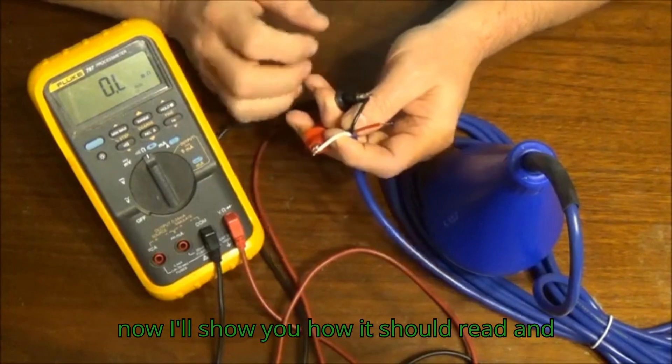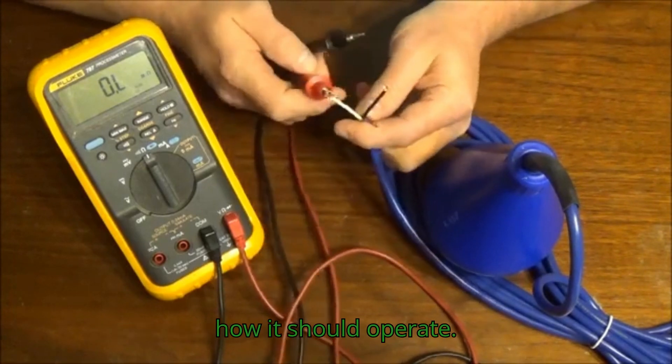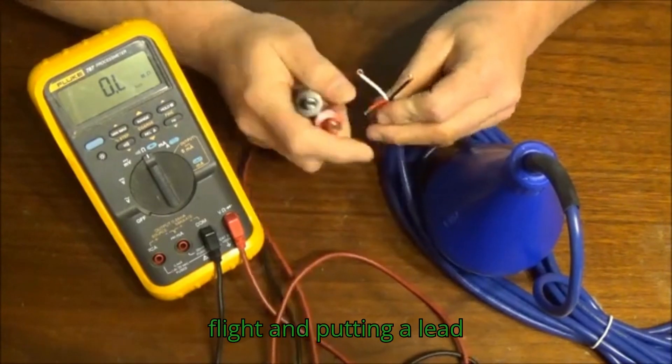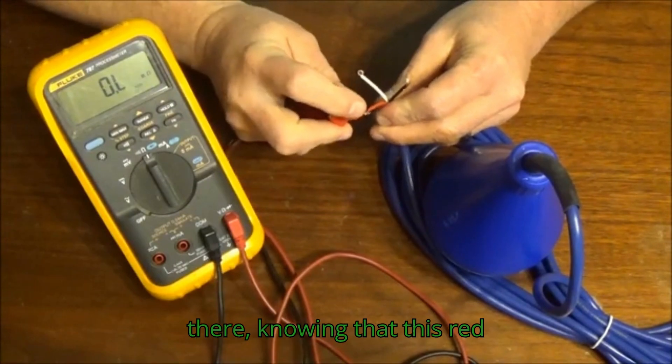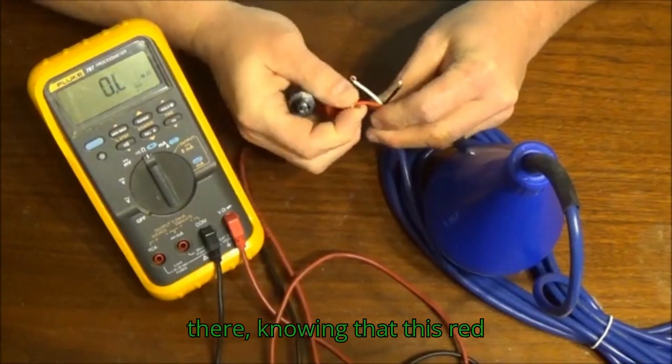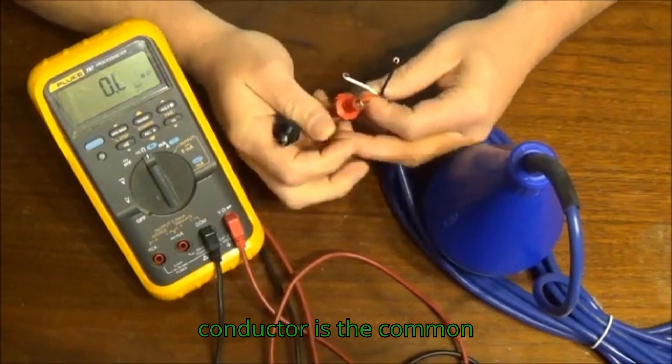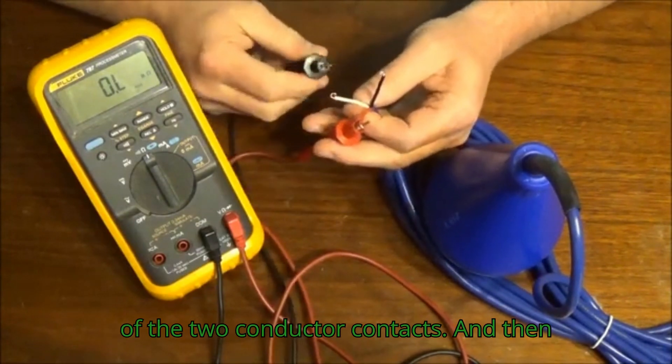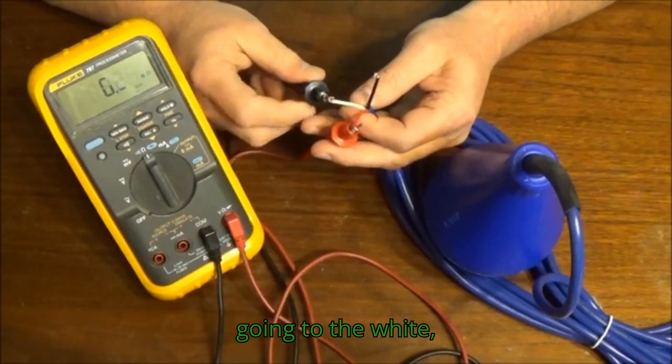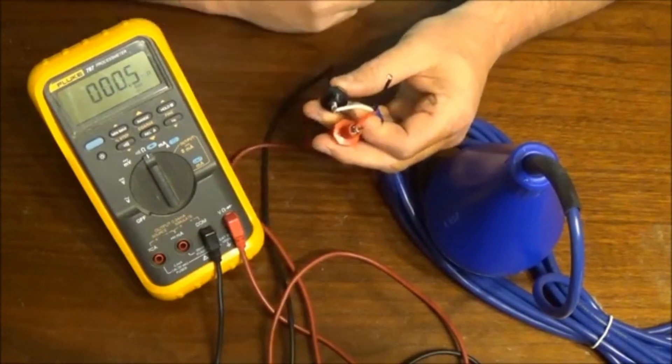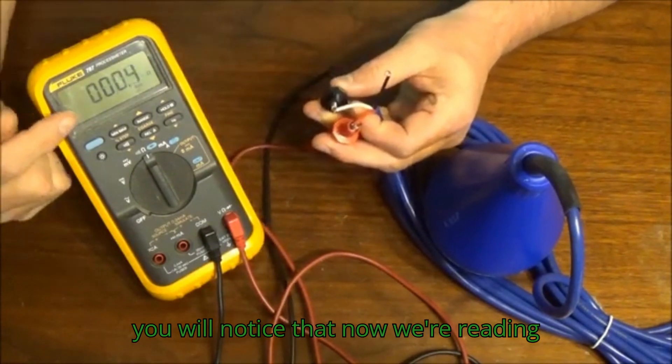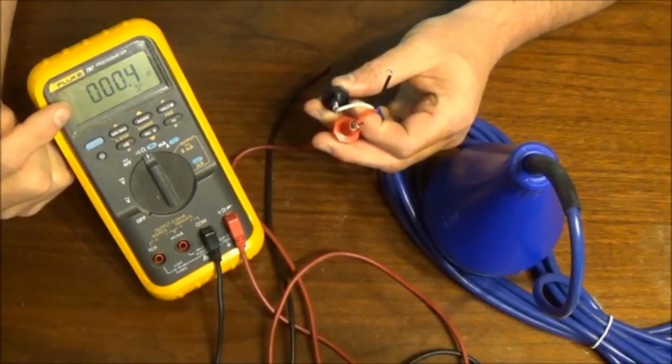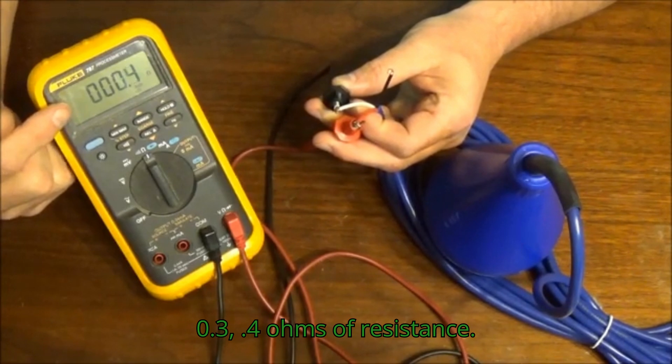Now I'll show you how it should read and how it should operate. Moving to this red conductor on this float and putting a lead there, knowing that this red conductor is the common of the two conductor contacts, and then going to the white, you will notice that now we are reading the shorted condition near zero, 0.3, 0.4 ohms of resistance.